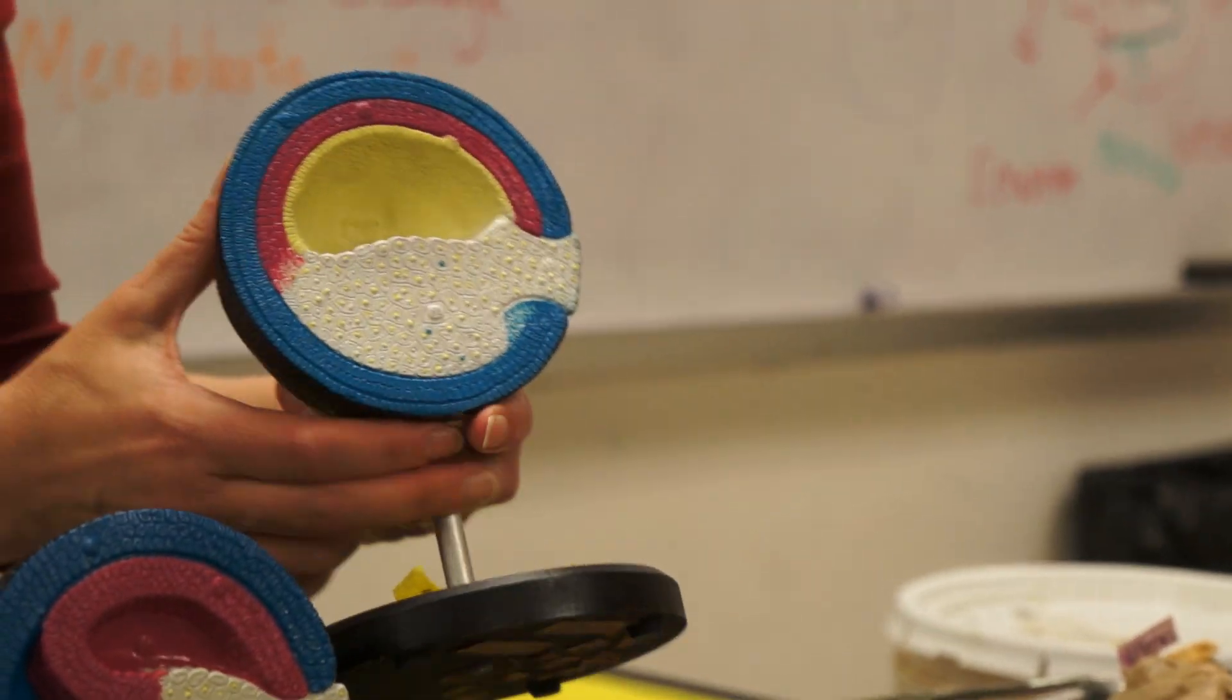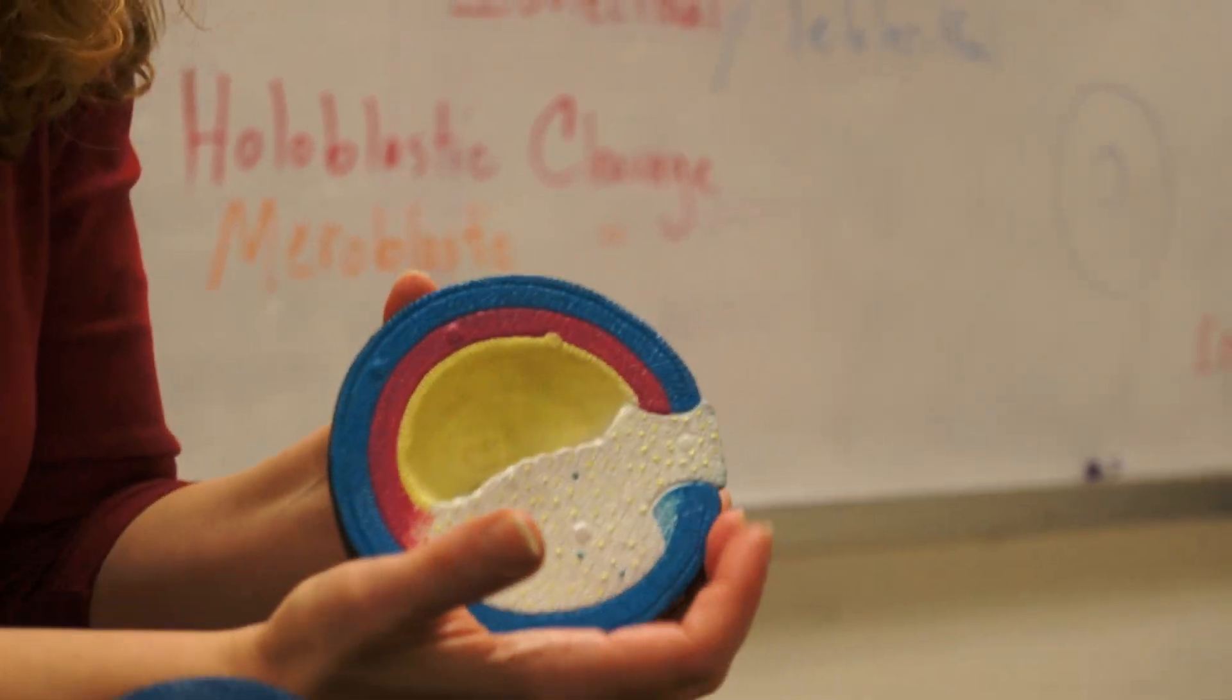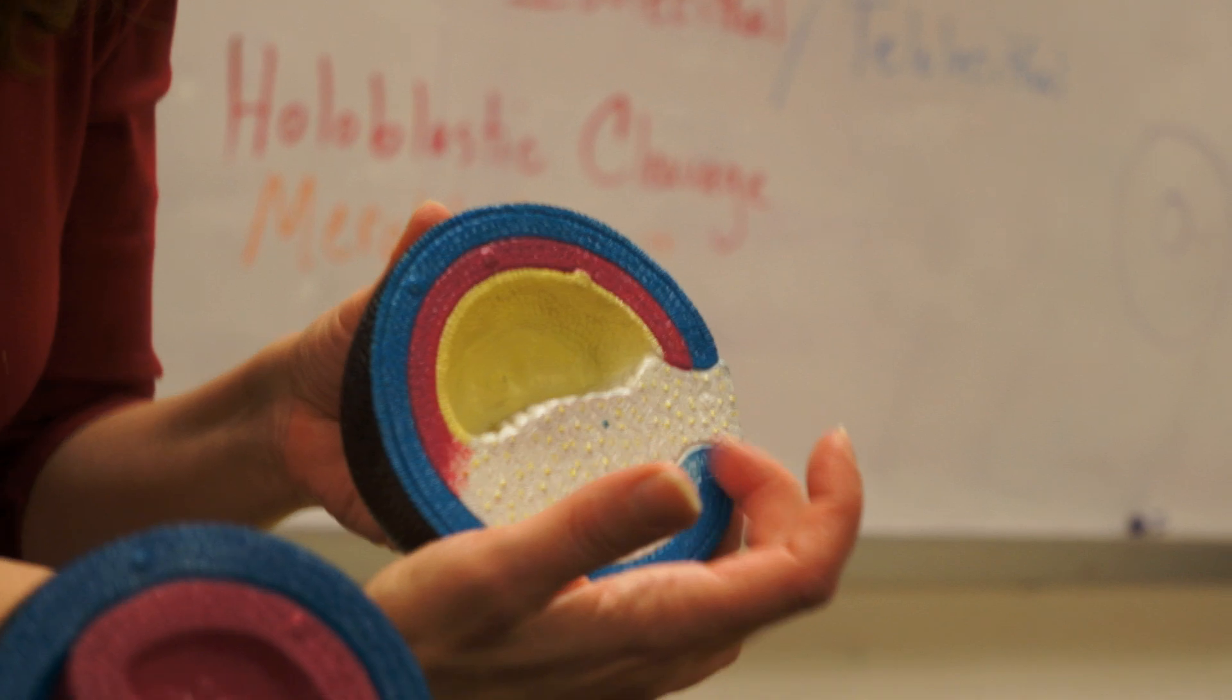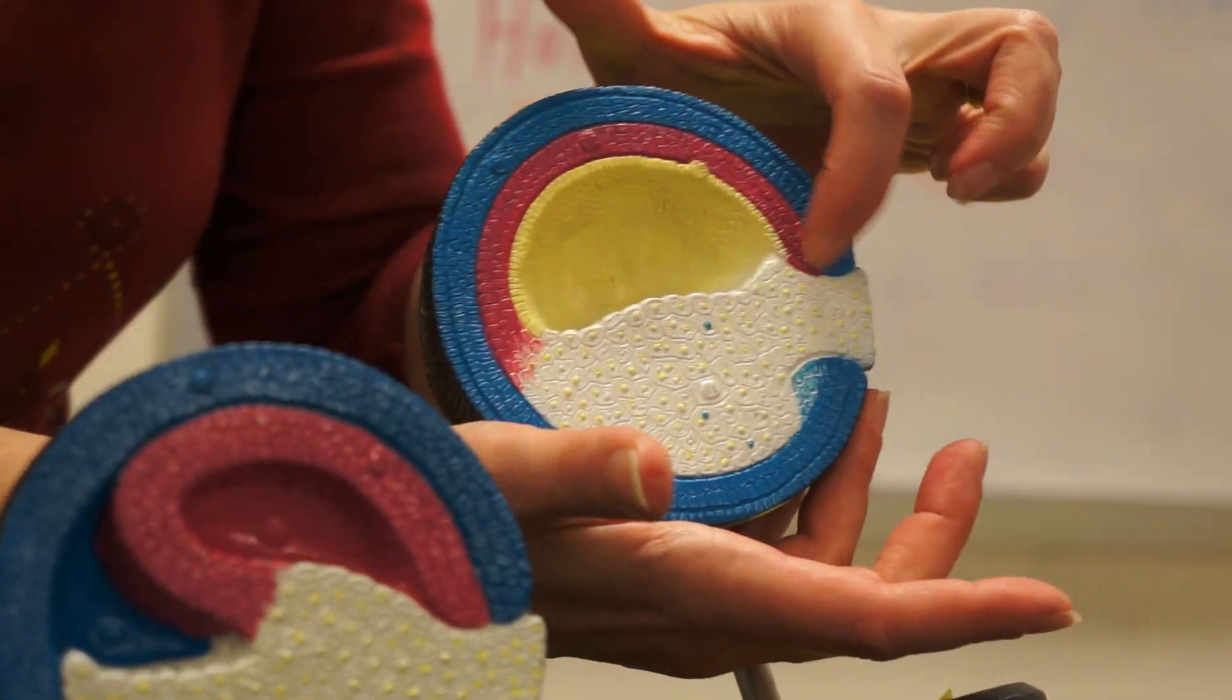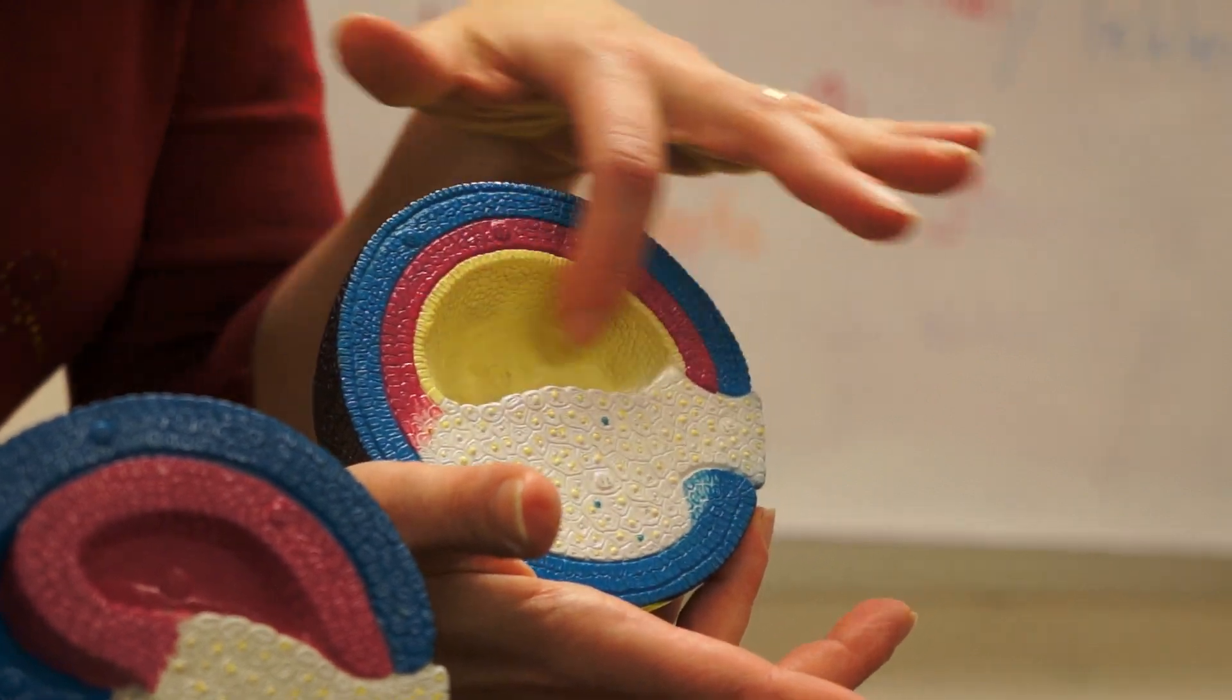Here is a fully formed gastrula with a yolk plug. The animal pole cells have completely come around to migrate inward at this edge also. Again, this would be the dorsal lip where the migration first began to involute to form the archenteron.